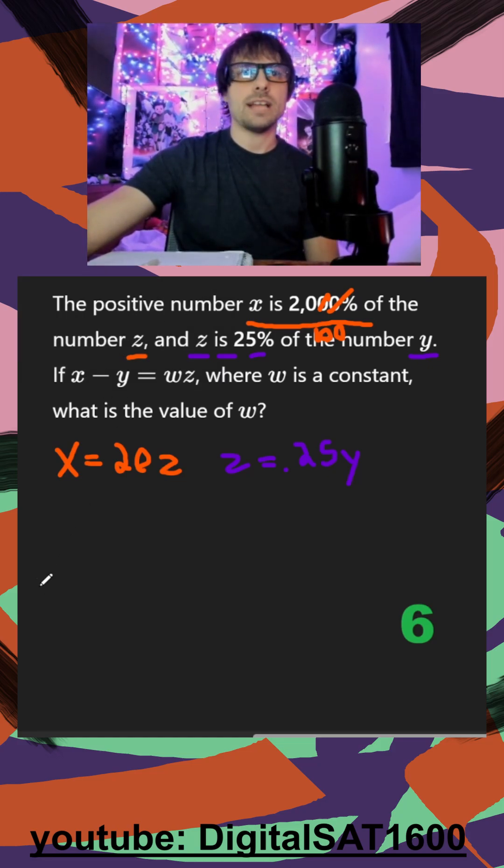Then finally, they give us our last equation here: x minus y is equal to wz. And they want us to figure out what w is.